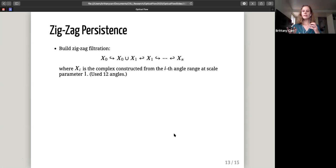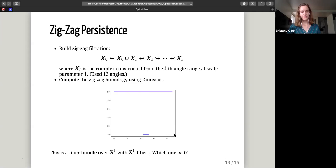Okay, so if we're going to use zigzag persistence, we need to build our zigzag filtration. So we're going to take all these angle bins that we split up into, we actually use 12 different angle bins, where x_i is the complex constructed from the ith angle range at scale parameter one. So we'll take all these different angle bins and then we'll actually overlap them and look at the union of those two bins. We'll compute the zigzag homology using Dionysus, and turns out what we get is no surprise because my title was talking about a torus. We're going to end up getting a single hole, so these are all talking about the same circle. So what this tells us is that this is going to be a fiber bundle over S^1 with S^1 fibers.